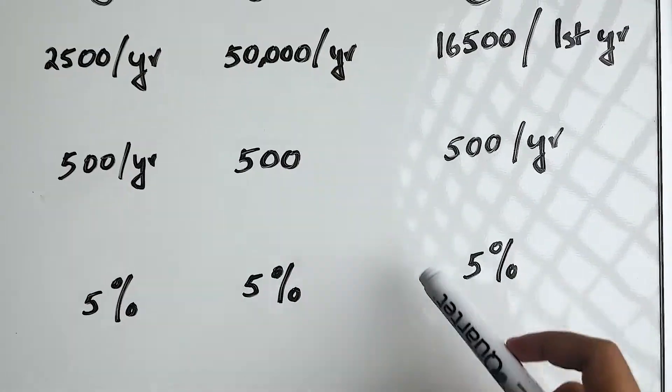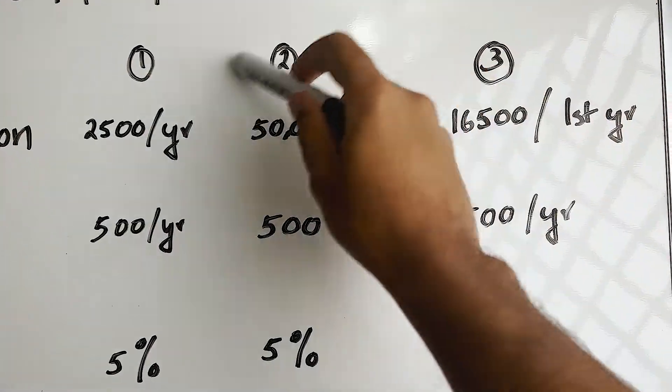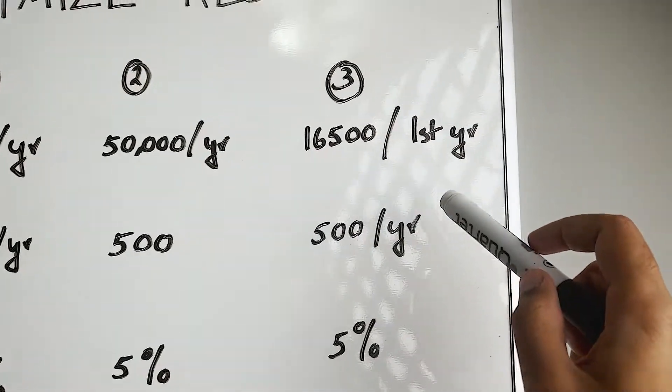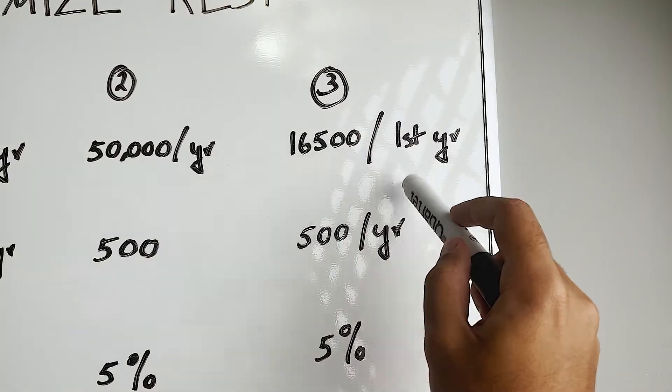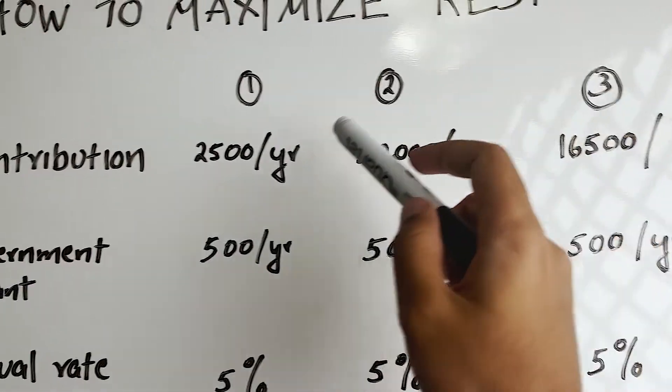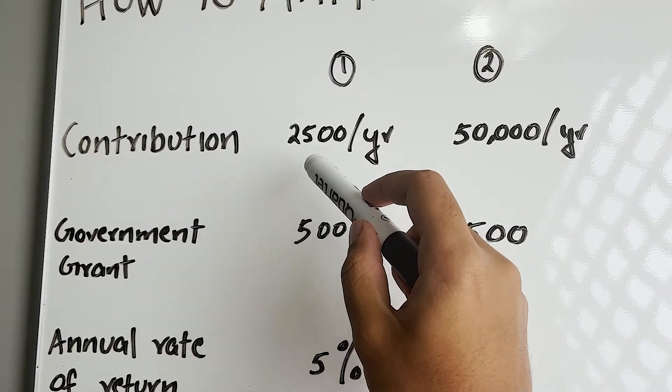If you have $50,000 to contribute in the first year, go for the second scenario. If you can contribute $16,500 in the first year, go for the third scenario. And if you don't have a lump sum to contribute in the first year, go for the first scenario.